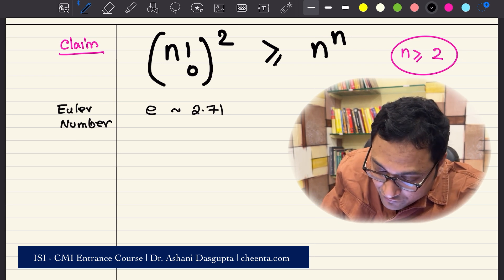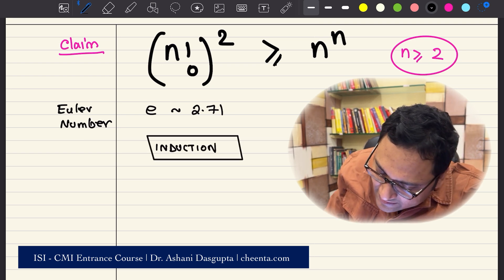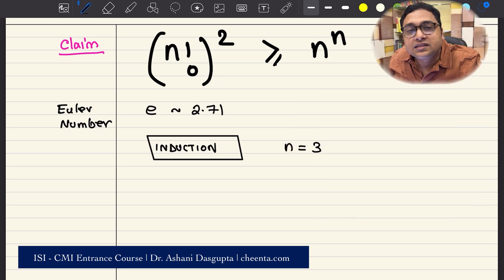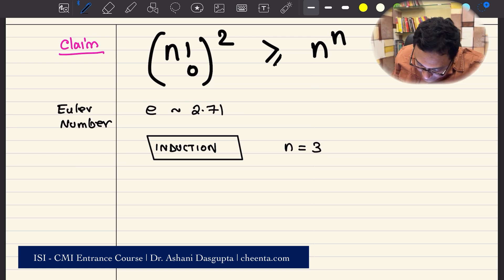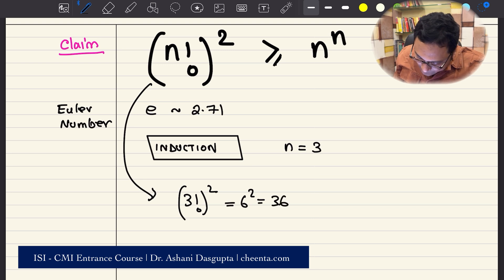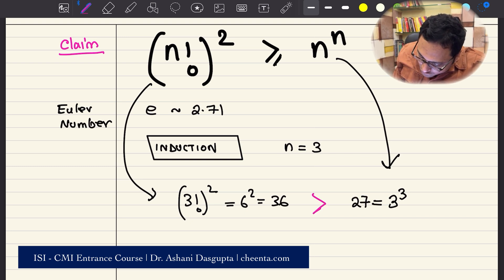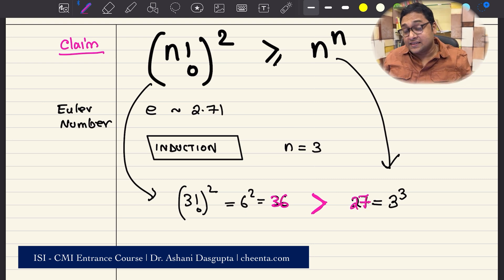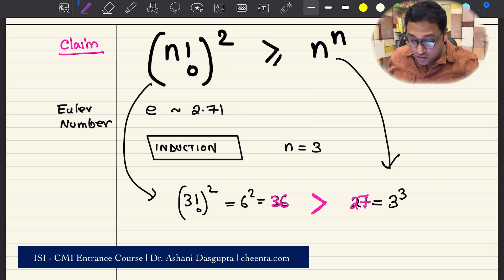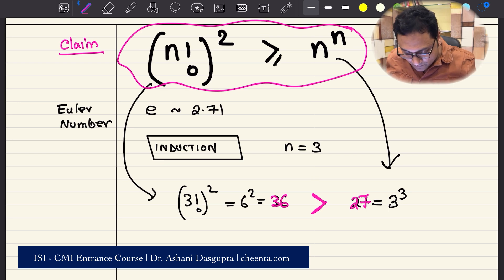Let's do this particular problem using mathematical induction. First, let's check for n equals 3 whether this inequality is true. The left-hand side is 3 factorial whole square. 3 factorial is 3 times 2 times 1, which is 6, so 6 squared is 36. The right-hand side is 3 to the power 3, which is 27. Clearly 36 is greater than 27, so the inequality is true for n equal to 3. You can check for n equal to 2 — the equality will hold there.